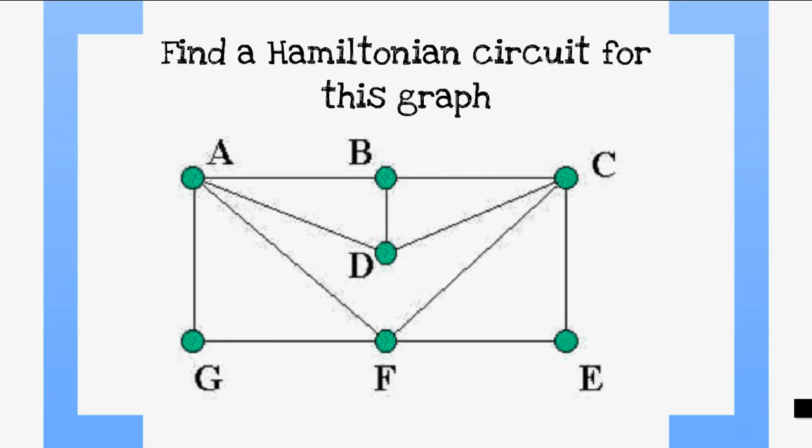We need to find a Hamiltonian circuit for the graph shown in this picture. One of the possible solutions, if you follow along, is A, G, F, E, C, D, B, A. If you followed along, you can see that this is a Hamiltonian circuit as it goes through every one of the vertices exactly once and ends up back at the same initial vertex.